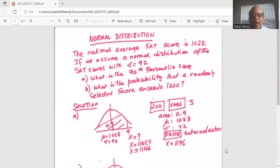The national average SAT score is 1028. If we assume a normal distribution of the SAT scores with sigma, the standard deviation equal to 92, what is part A? What is the 90th percentile score? And part B, what is the probability that a randomly selected score exceeds 1200?